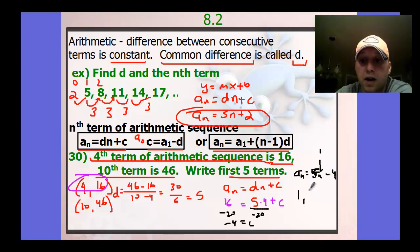Now I want the first five terms in this pattern. So term number one, just plug 1 in for n, and you have 5 minus 4 is 1. And I'm just going to add 5. So 6 plus 5, 11 plus 5, 16 plus 5, 21. Those would be the first five terms.